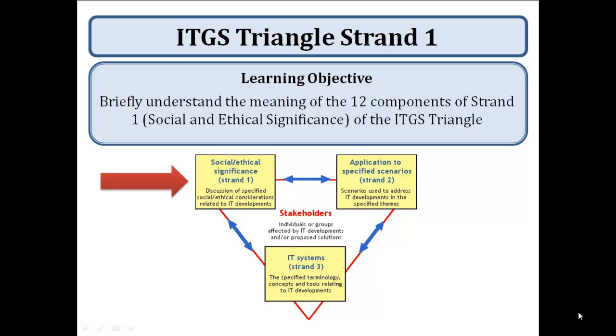In this presentation, I'm going to briefly outline the 12 different components that make up Strand 1 of the ITGS Triangle. It's this section here that we're looking at, the social and ethical significance of the different scenarios and articles that you'll study during the ITGS course.